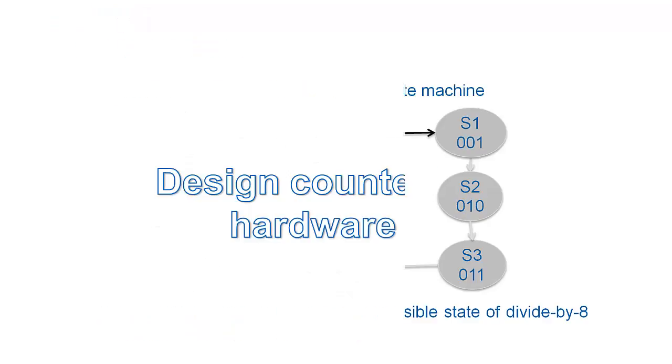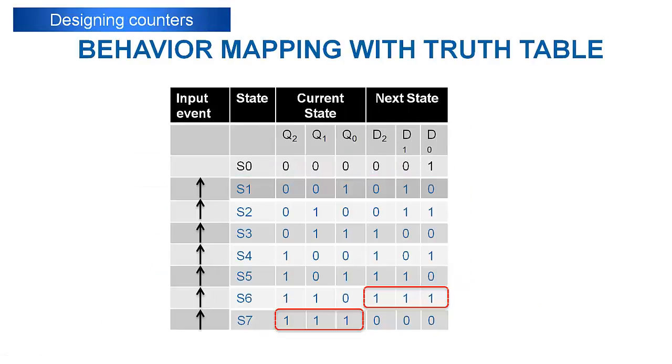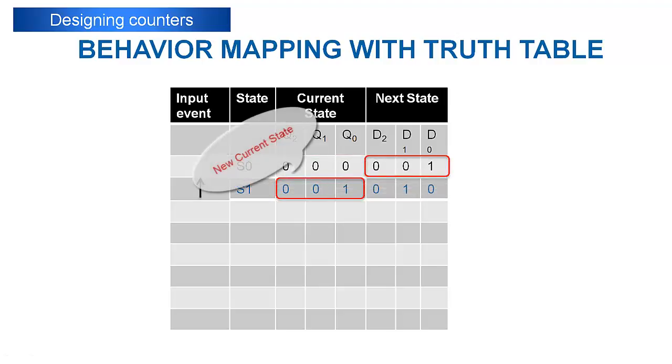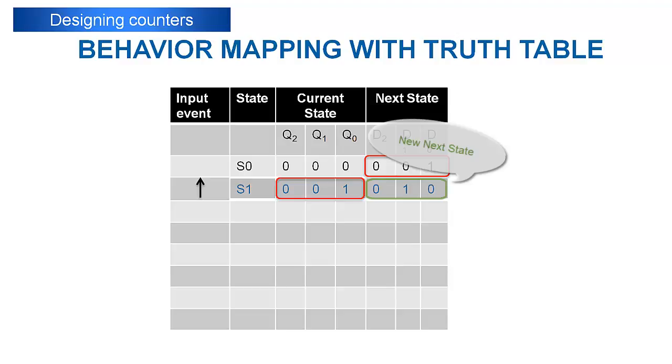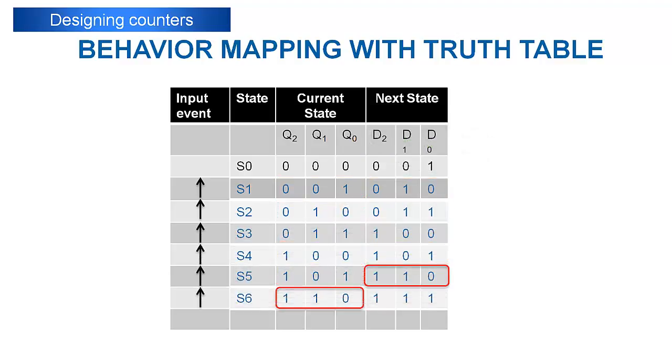Now let us design this counter in hardware. The first step is to map the behavior of counter as state machine in a truth table. As state machine has depicted in previous slide, it starts in state S0 and next predicted state S1. With an input event, it moves to S1 which becomes its new current state and S2 its new next state. Similarly, it will cycle through all the 8 states.